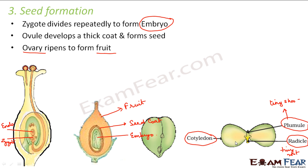Everything is happening step by step. First, pollination — pollen grains reach the stigma. Second, fertilization — the pollen grain travels from the stigma to the ovary, fuses with the egg, and a zygote is formed. Third, the zygote divides repeatedly and forms an embryo. The ovule, which contains the embryo, becomes the seed, and the ovary becomes the fruit. The seed's internal structure consists of a tiny shoot called the plumule, a tiny root called the radicle, and food storage in leaf-like structures called cotyledons.